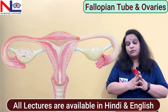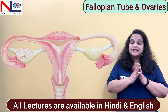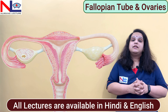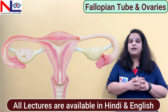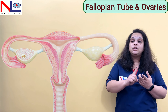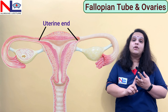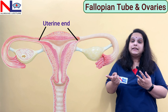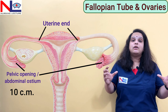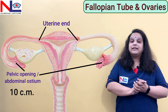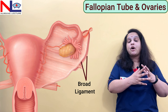The fallopian tube is a paired structure that extends from the lateral border of the uterus. It is a hollow muscular structure that has two openings: one toward the uterus is the uterine end, and the other toward the abdominal cavity is the abdominal ostium. It is a 10 cm long structure and it lies within the free margin or free border of the broad ligament.